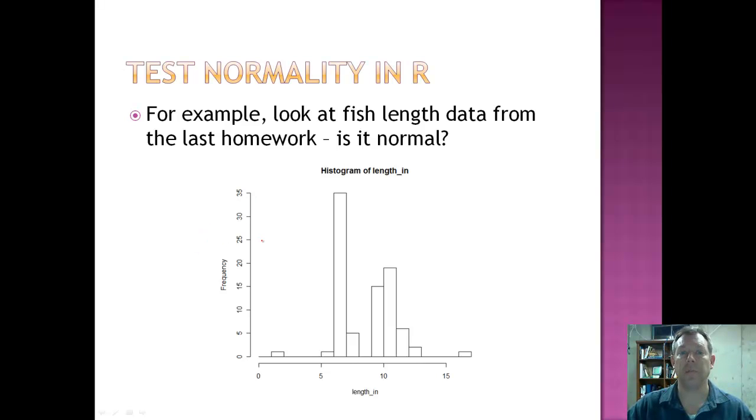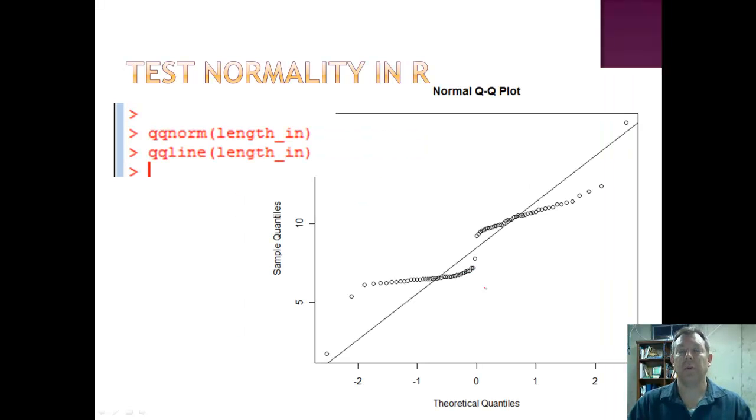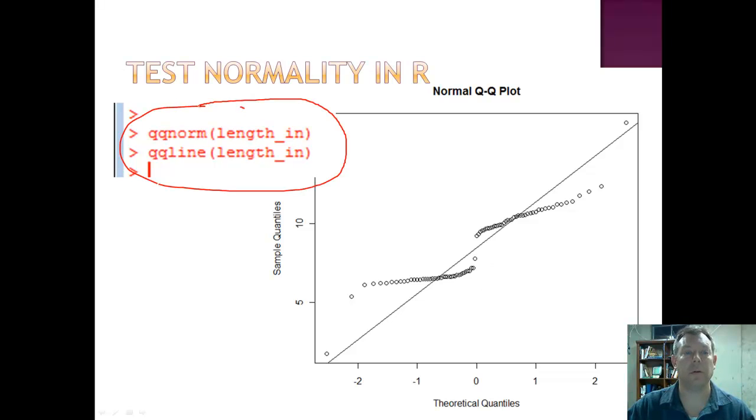Here is the histogram from the homework that you should have turned in today. And so it's fish data and it doesn't really look normal. We've got this mode kind of here at seven inches and then kind of another smaller peak. And it's not a nice smooth curve like we saw in the hypothetical picture from your book. And so when we run those data through R, and here you're seeing where we use QQ norm on the length in inches and then QQ line in the length in inches. And this is what a QQ plot looks like.